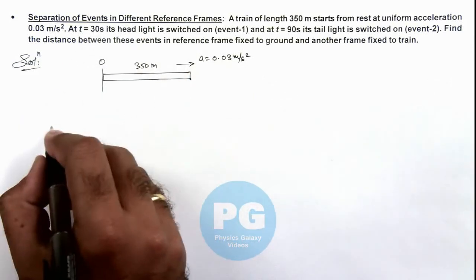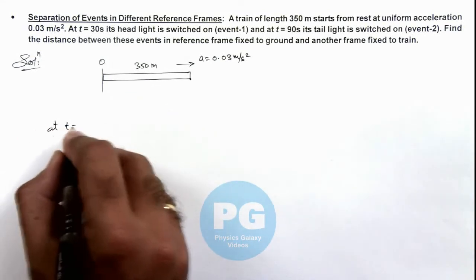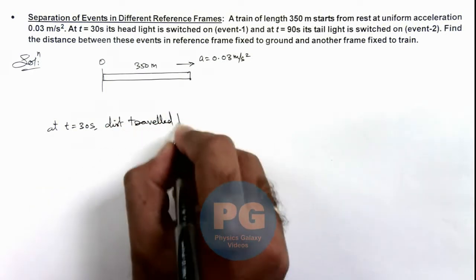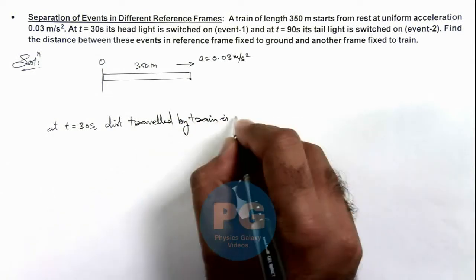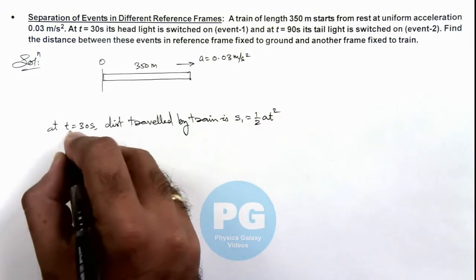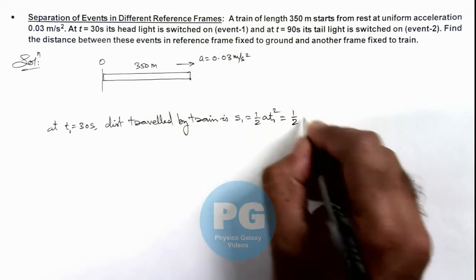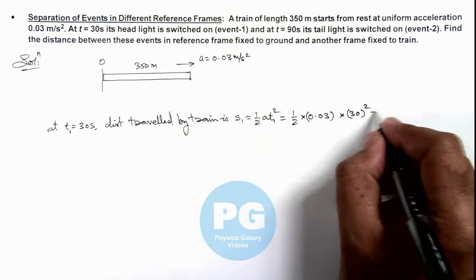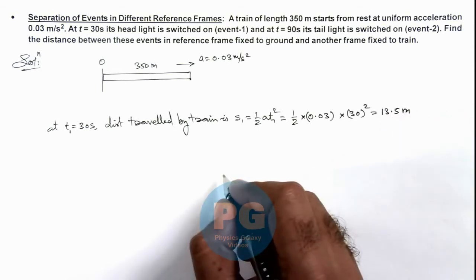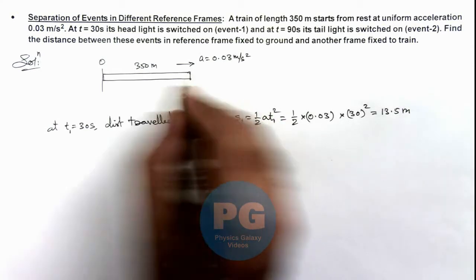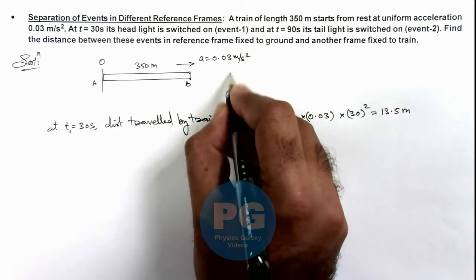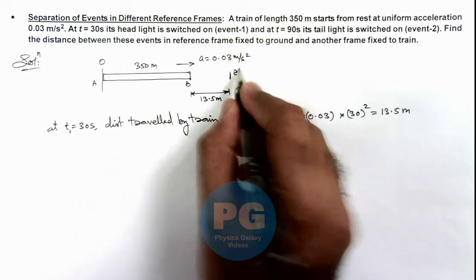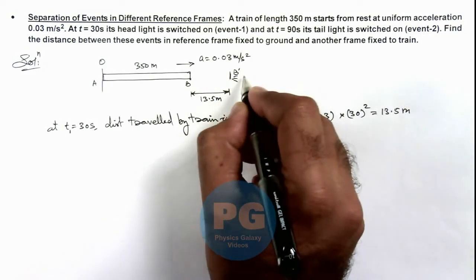So if we calculate the distance travelled by the train in 30 seconds, at t equal to 30 seconds the distance travelled by the train is s1, which is half a·t squared. This is half multiplied by 0.03 multiplied by 30 squared, which gives us 13.5 meters. That means in 30 seconds the front end of the train — say if the train is AB — its front end B will reach a position at a distance of 13.5 meters from the initial location. This is the B prime position where its headlight is switched on, which we consider as Event 1.